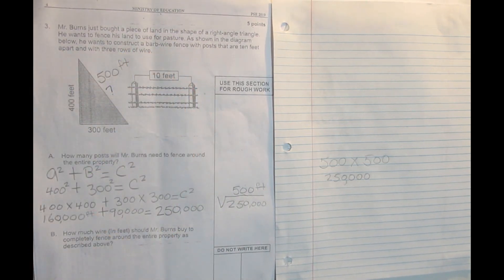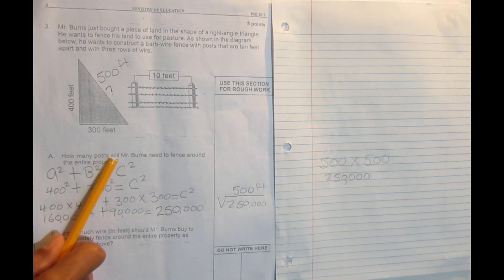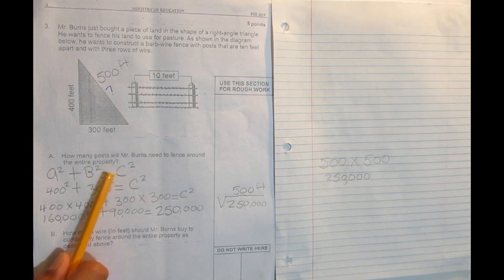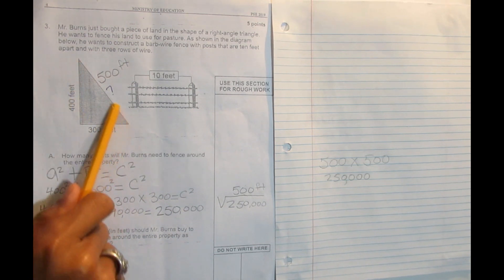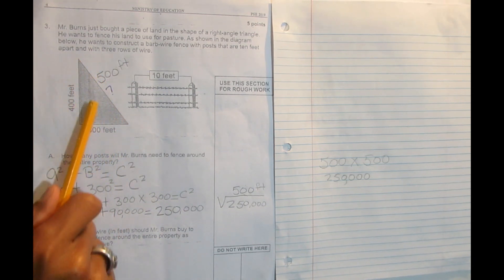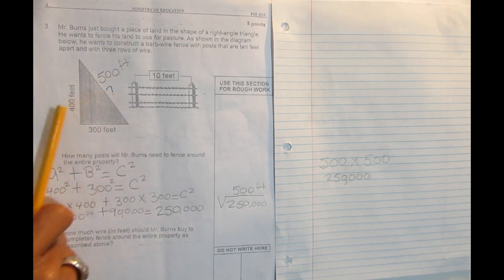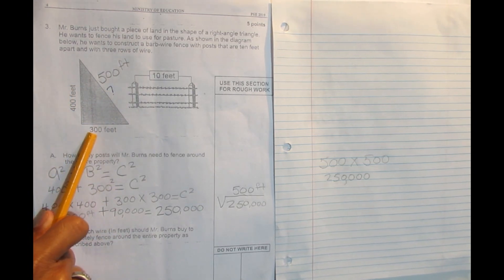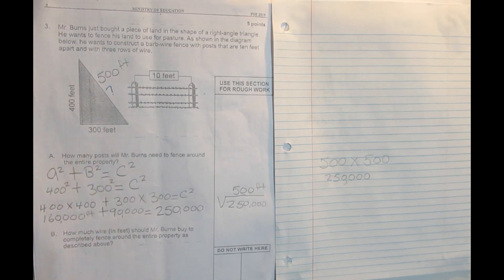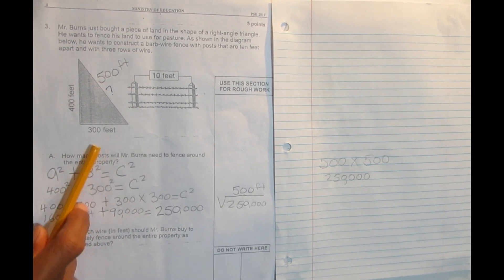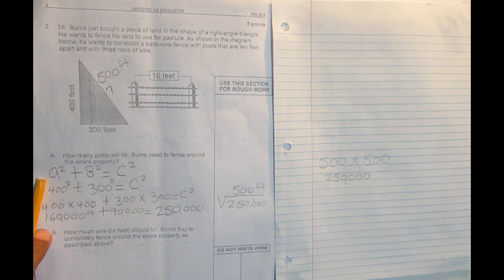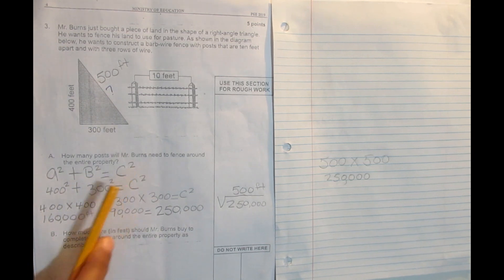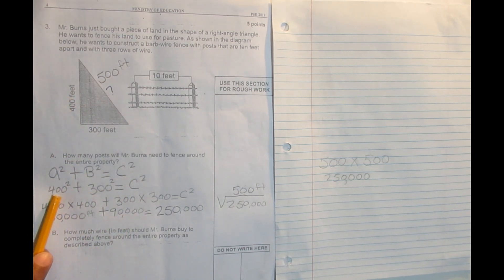We needed that missing length to continue the problem. Part A asked how many poles Mr. Burns needs to fence around the entire property. This triangle was the property, but it had a missing length. They gave us A which is 400 feet and B which is 300 feet. Whenever you want to find a missing length of a right-angled triangle, you use the Pythagorean theorem: A squared plus B squared equals C squared.